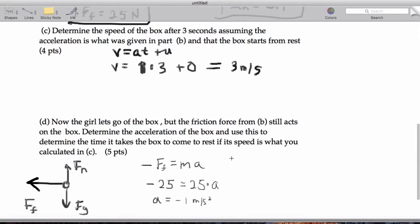So, let's get the time it takes to come to rest. Well, we have V equals AT plus U as the equation we will bring down. So, V is going to be 0. And then we have negative 1 times the time plus the 3 meters per second. So, eventually, we are going to get a time equal to 3 seconds for it to stop.